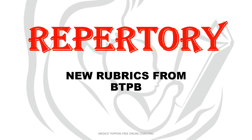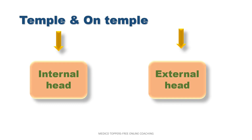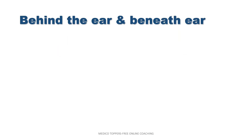Hello, good morning. Vanakkam. Continuing today's repertory — BTPB — confusing rubrics. Temple and on temple: temple is the temporal lobe, which is part of the brain, so it is internal head. On temple is external head. Behind the ear and beneath the ear — behind the ear is external head.